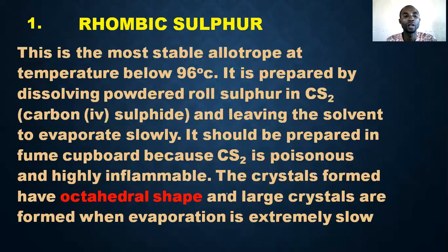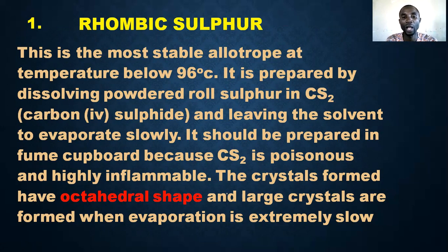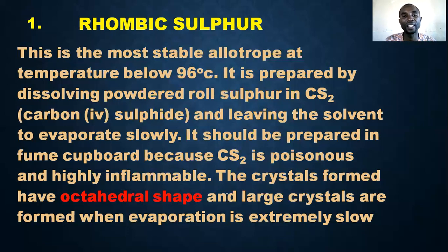Rhombic sulfur is the most stable allotrope at temperatures below 96 degrees Celsius — the most stable among all the allotropes of sulfur. It is prepared by dissolving powdered roll sulfur in carbon disulfide and leaving the solvent to evaporate slowly. It should be prepared in small quantities because carbon disulfide is poisonous and highly inflammable.